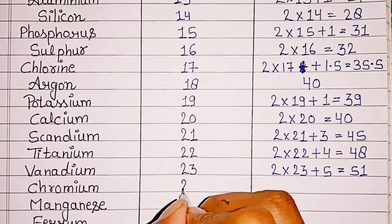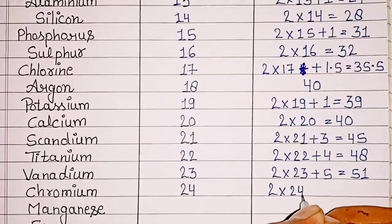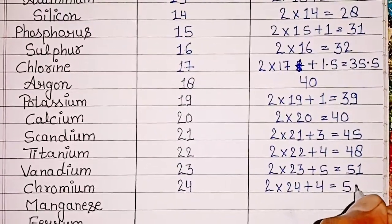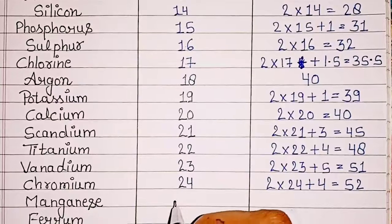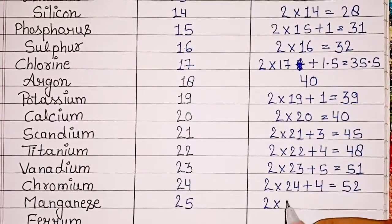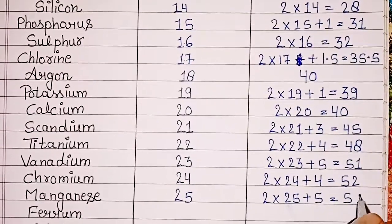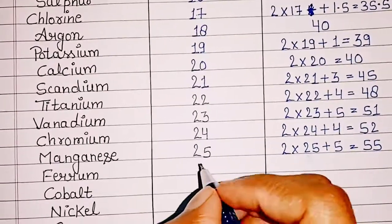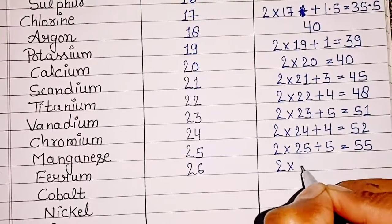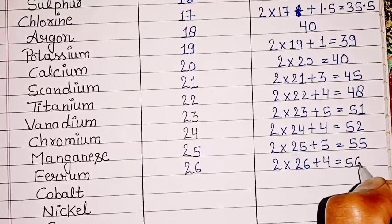Chromium: atomic number 24, mass number 2 x 24 + 4 = 52. Manganese: atomic number 25, mass number 2 x 25 + 5 = 55. Iron (Ferrum): atomic number 26, mass number 2 x 26 + 4 = 56.